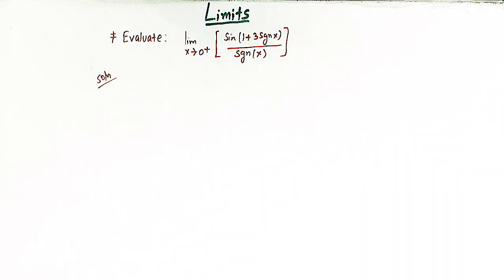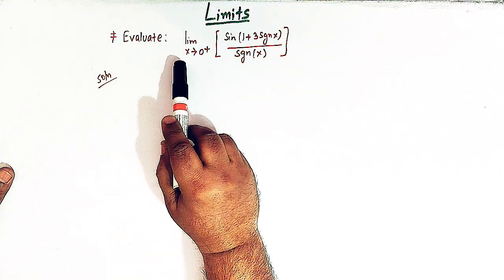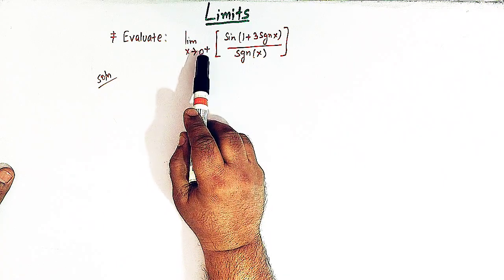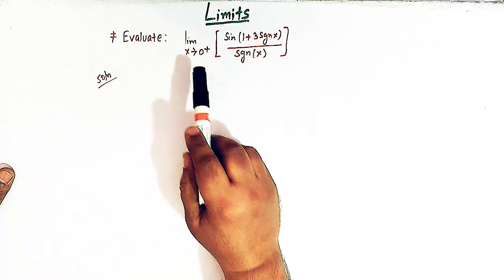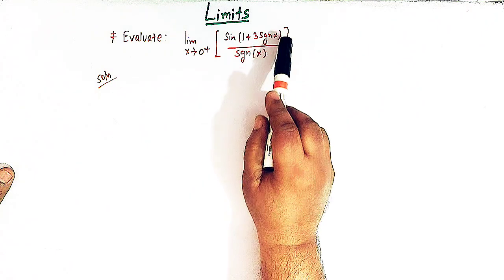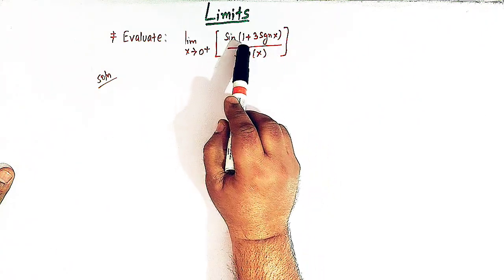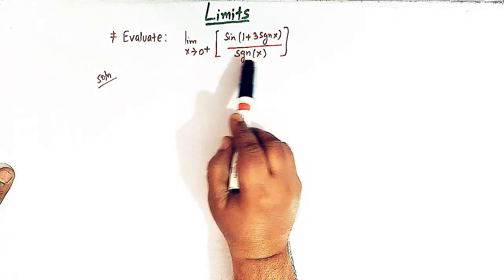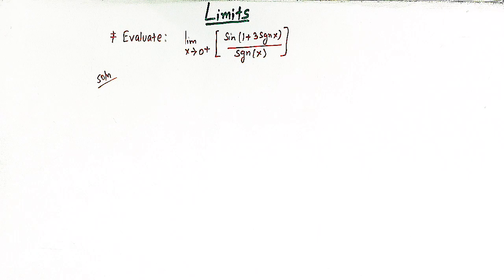Hello viewers. In today's session we are going to discuss another important and conceptual problem from limits involving the greatest integer function and signum function. So here we have to evaluate this limit: limit x tends to 0 positive. This positive sign shows that we have to find the right-hand limit of this function when x approaches 0. The function is greatest integer of sine(1 + 3 times signum of x) divided by signum of x. So here we have two important functions: the greatest integer function and the signum function.